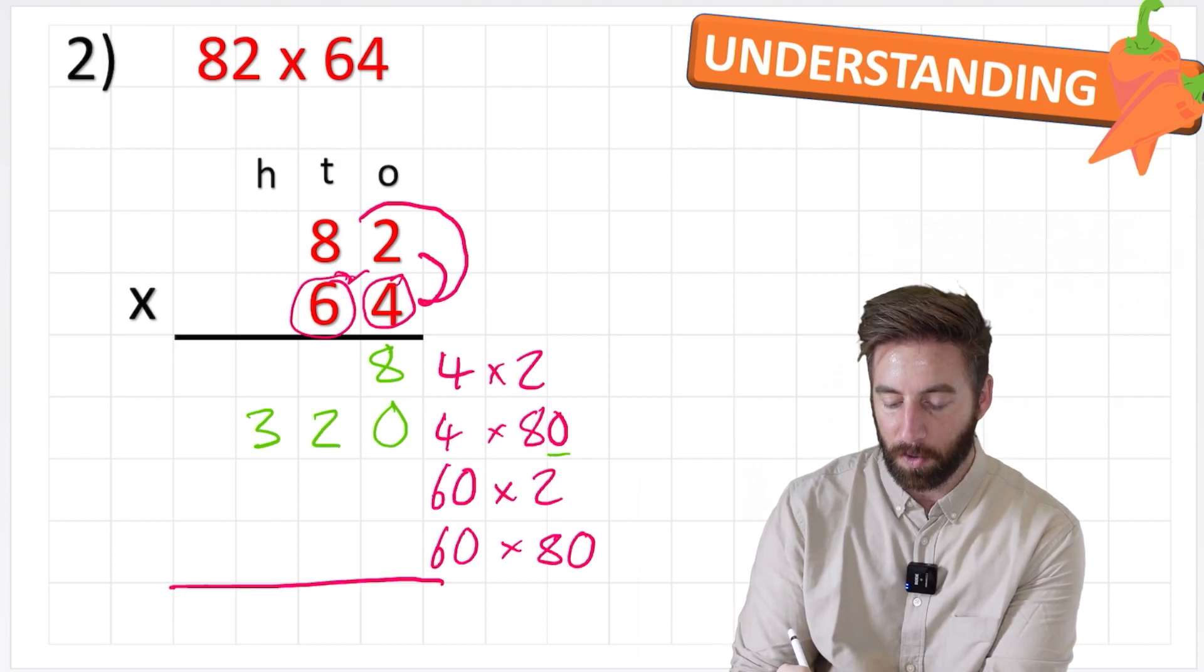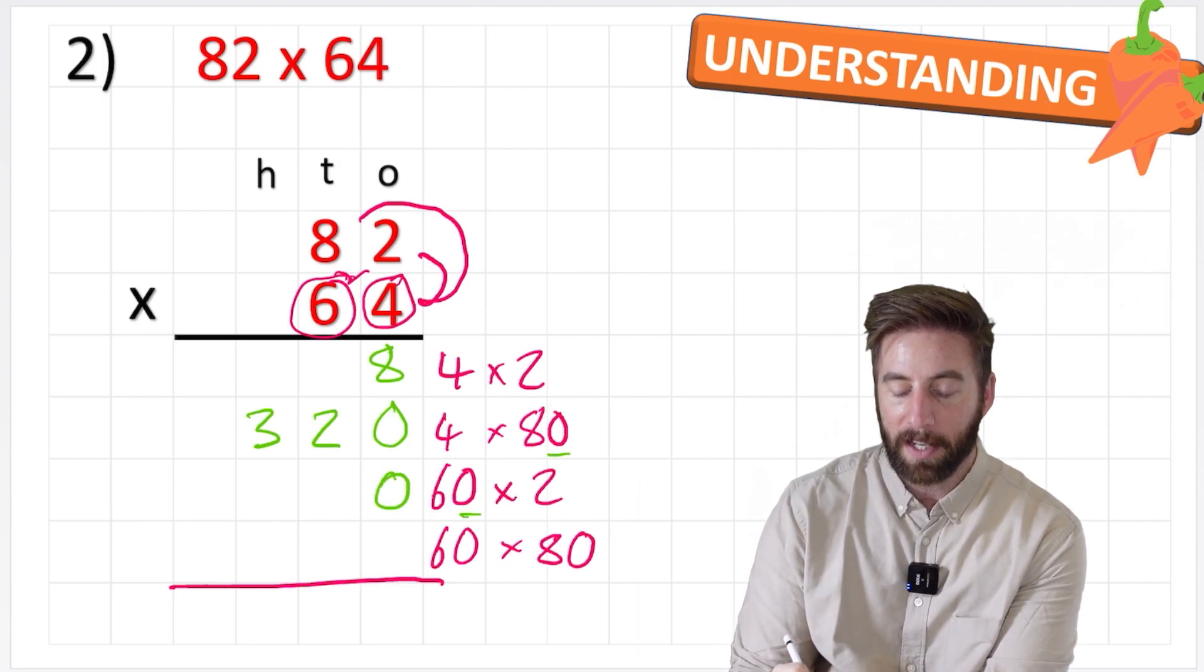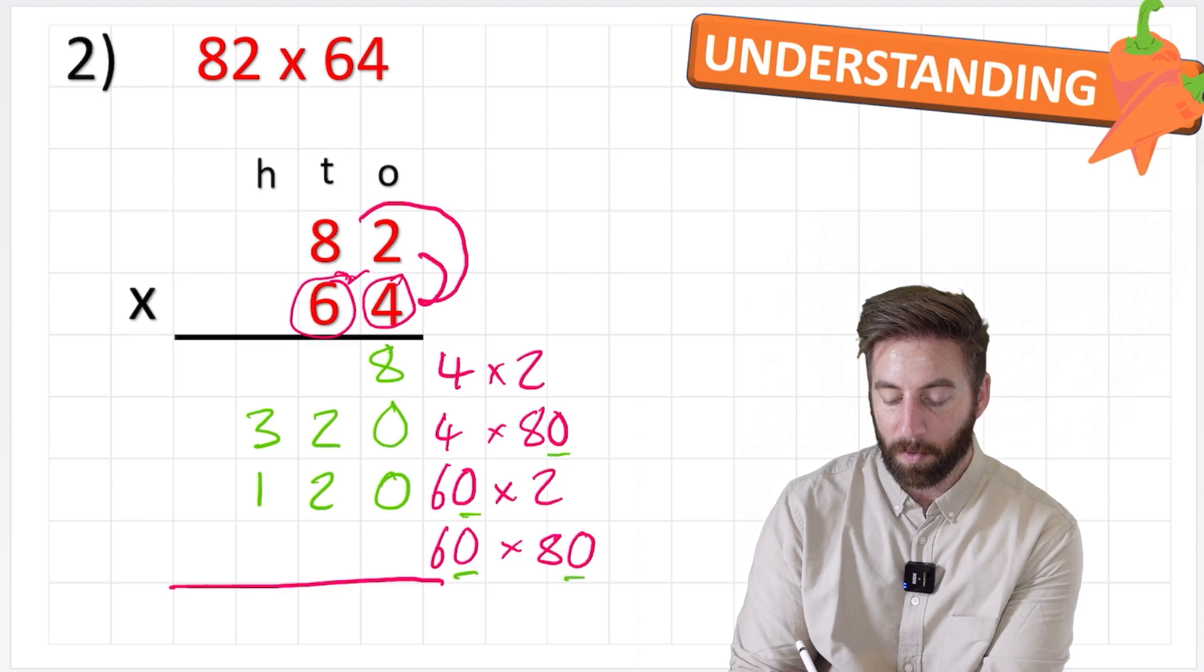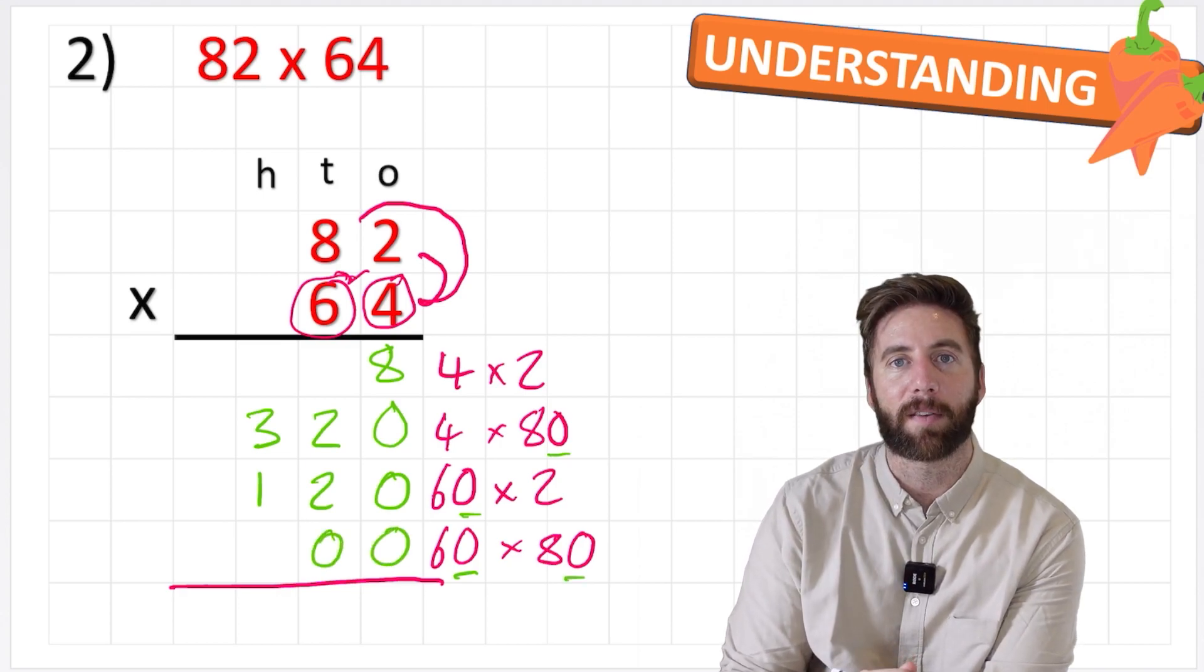Now I've got 60 times 2. Put my placeholder in place. 6 times 2 is 12. Now I've got 60 times 80. I've got 2 placeholders. 1, 2. 6 times 8 is 48.